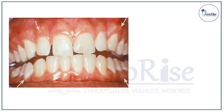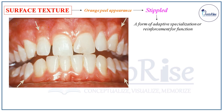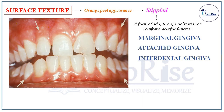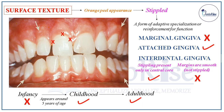The last heading of this topic is the surface texture of the normal gingiva. A normal or undiseased gingiva has an orange peel appearance, or we can say it has a stippled appearance. This stippling is a form of adaptive specialization or reinforcement for the function of gingiva. It is to note that this stippling is not present in the marginal gingiva — it is present in the attached gingiva and in the interdental gingiva, only in the central core, and not at the margins of interdental gingiva. Also, this stippling is not present at the time of infancy; it appears at around 5 years of age, remains in childhood and adulthood, but by the time a person reaches old age, this stippling disappears.